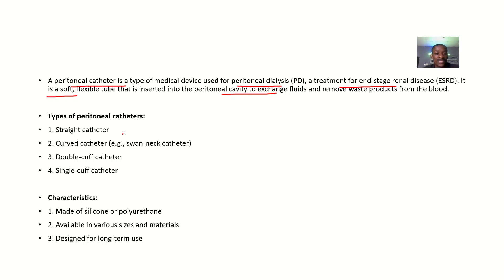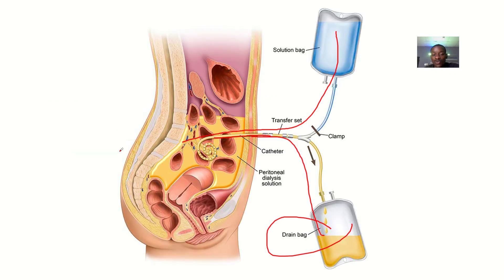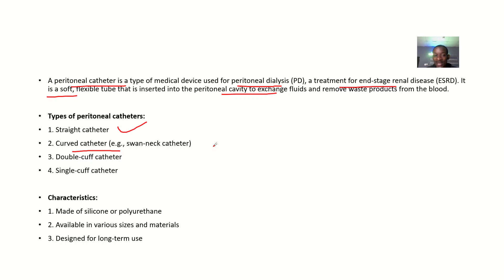What are the different types of peritoneal catheter? We have the straight catheter, we have the coil catheter, the swan neck catheter — you can see this one is shaped like a swan neck. We also have a double cuff catheter and a single cuff catheter.